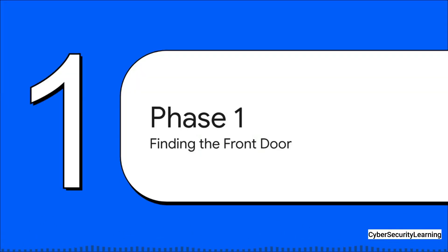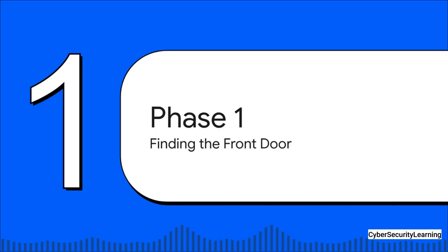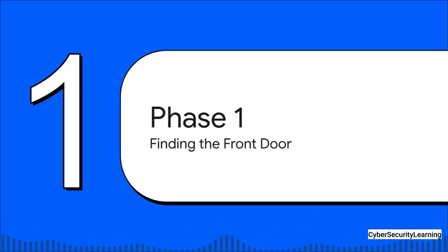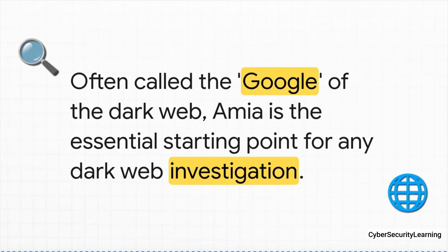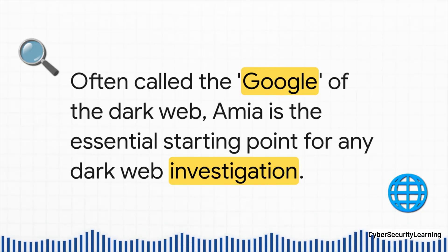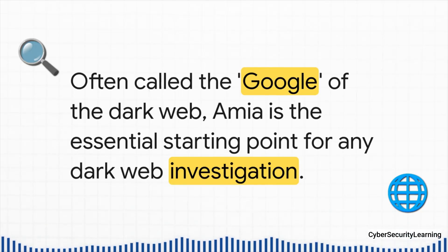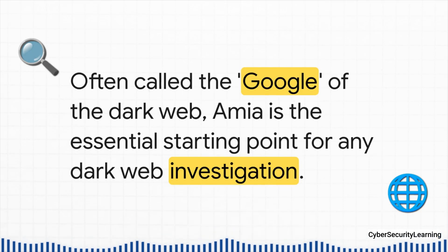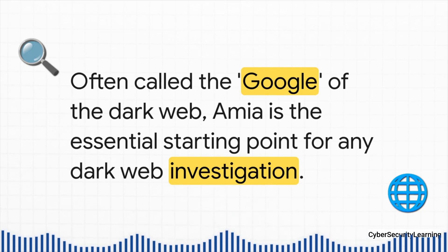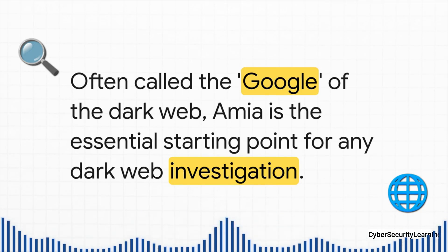Every single investigation has to start somewhere. And when it comes to the dark web, that first step is just finding the front door. This first phase is all about discovery, about that initial reconnaissance. So how in the world do you find those weird-looking .onion addresses in the first place? You start with a search engine that's actually built for the job.